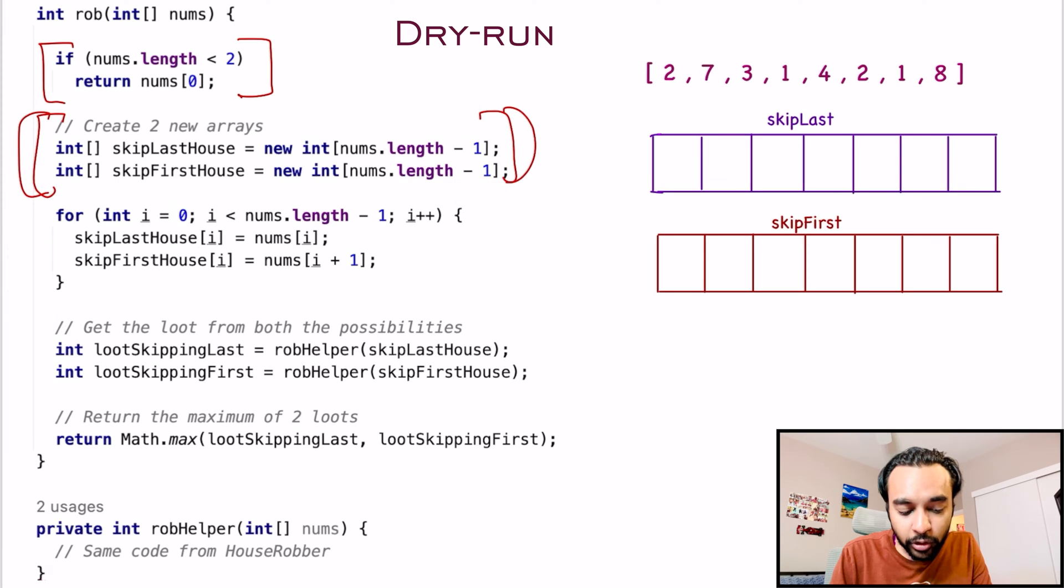So I start a for loop that goes from the beginning all the way up to the end. And the way I populate them is, for the last house, I will just take in the original value that is 2. And for the condition, when I'm skipping the first house, I will add the value at i plus 1. So in this array, 7 will be added. So when this for loop ultimately completes, both of my arrays will be populated like this.